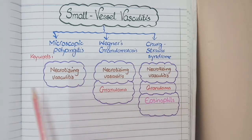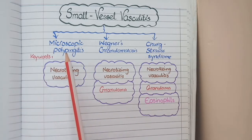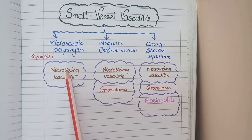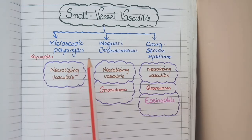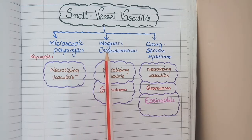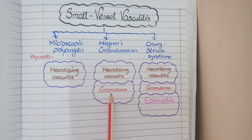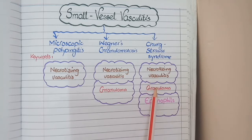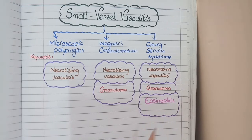This is a spectrum: microscopic polyangitis contains necrotizing vasculitis; Wegener's granulomatosis shows necrotizing vasculitis plus granulomas; and in Churg-Strauss syndrome, along with necrotizing vasculitis and granulomas, there is presence of eosinophils. The difference between these three types of small vessel vasculitis should now be clear, and we will discuss each of them in detail.